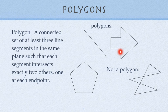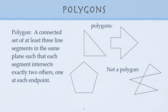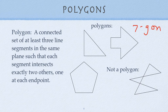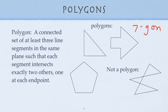Seven sides. So this is a seven-gon. Like polygon—poly means many—seven-gon means exactly seven sides. This one down here is a pentagon. It's got five sides. We could also call it a five-gon.